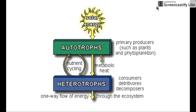Energy flows through ecosystems from the sun into our autotrophs through the process of photosynthesis, and then on to our heterotrophs. With the help of decomposers, those nutrients and that energy are recycled back into the environment for use by autotrophs again. Our autotrophs include primary producers such as green plants and phytoplankton — basically anything able to undergo photosynthesis — while our heterotrophs are made up of consumers, detritivores, and decomposers.